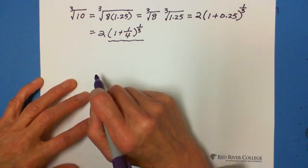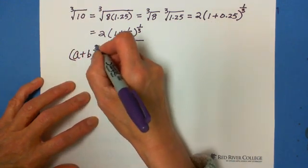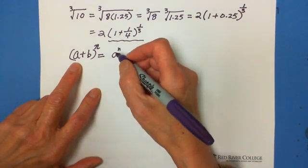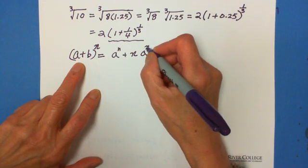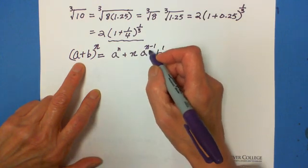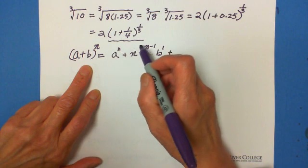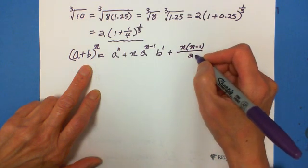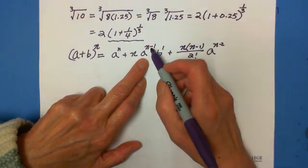We know the binomial expansion: (a + b) to the n exponent. The formula is: the first term is a^n. The second term is n times a^(n−1) times b^1, because these two exponents add together equal n. The third term is n times (n−1) divided by 2 factorial, and a is to the (n−2) exponent, descending by 1.